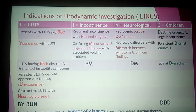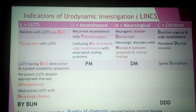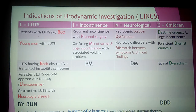Under neurological disorder, both indications are: neurogenic bladder dysfunction and mismatch between symptoms and clinical findings. The fourth group is children, with the three D's: daytime urgency with urge incontinence, diurnal enuresis persisting, and spinal dysraphism.